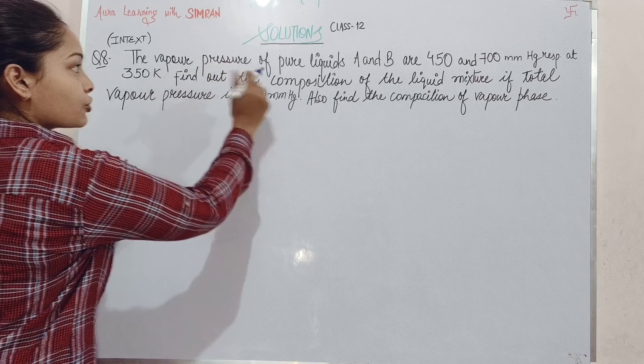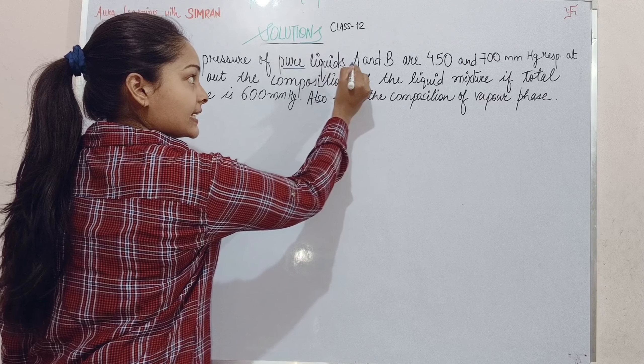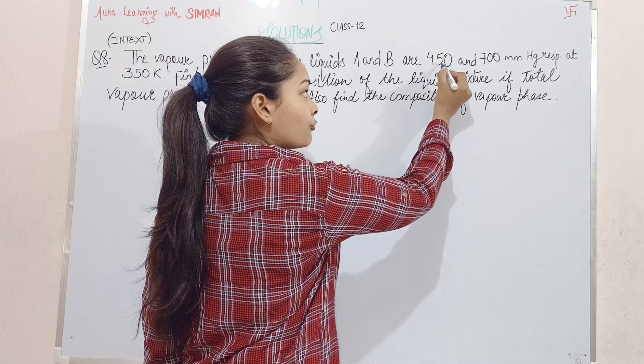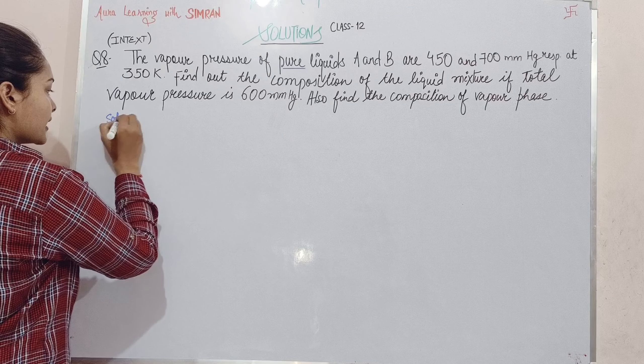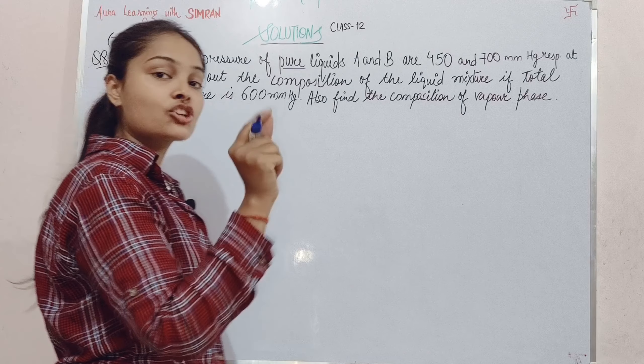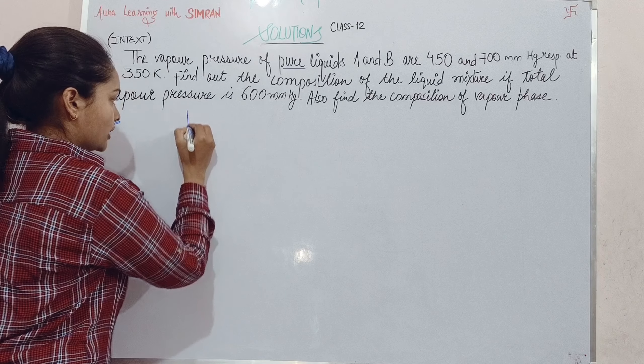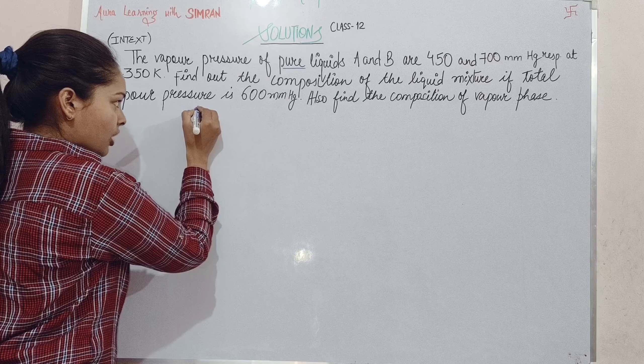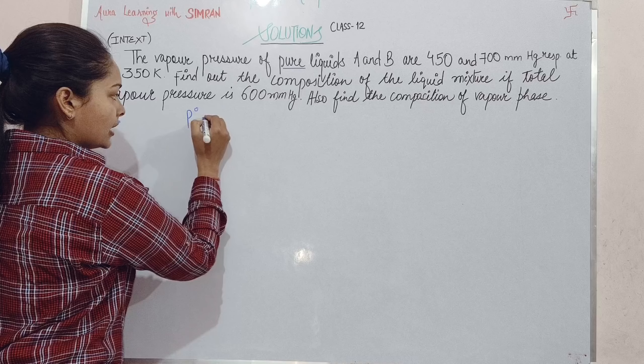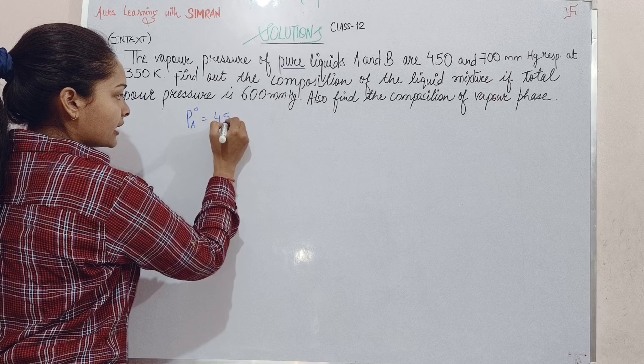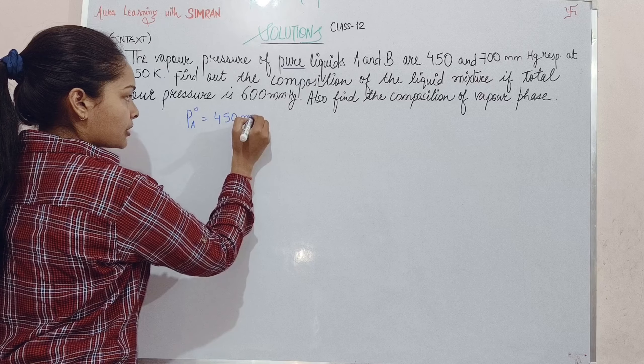The vapor pressure of pure liquids A and B are 450 and 700 mmHg. When they are pure, we put a naught on it. P°A is 450 mmHg.